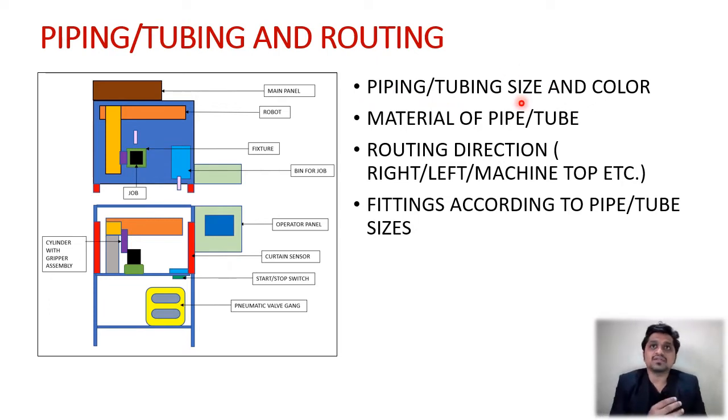You must consider the size of the tubes. If you consider pneumatics, the size can be 6 OD, 8 OD, 10 OD. You should think about the size of the tube according to your actuator size or other things. It may not happen that all the things in the system require the same tubing size, so you must be aware of that you want different tube sizes.